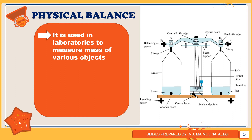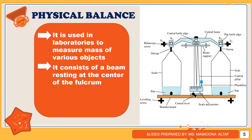Physical balance consists of a beam resting at the center. As you can see in this figure, there is a scale and a pointer given. There is a beam with a pointer attached. When the pointer is at zero, it means that the beam is balanced. There are leveling screws, which are used to balance the pan or to remove any zero error in the physical balance.